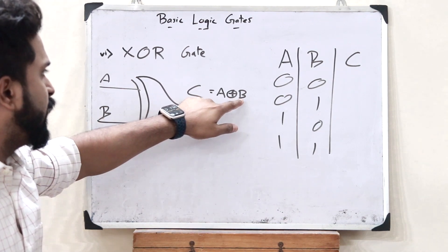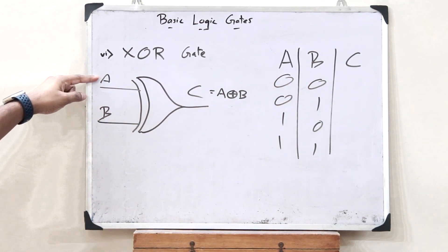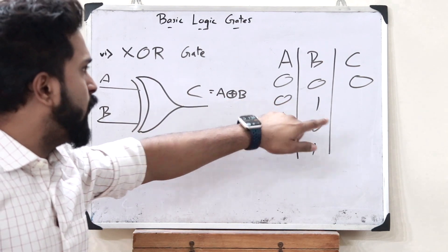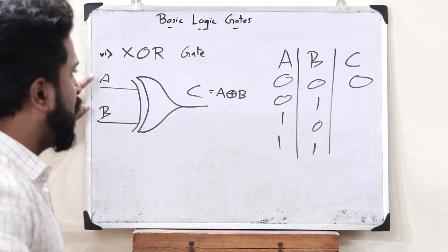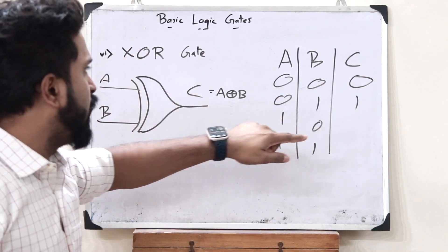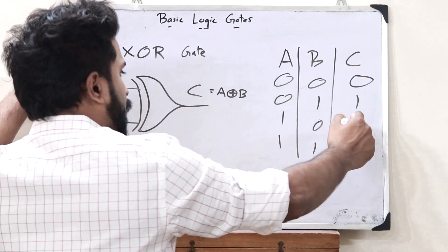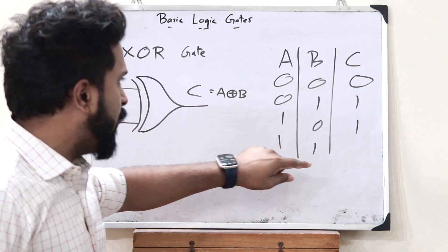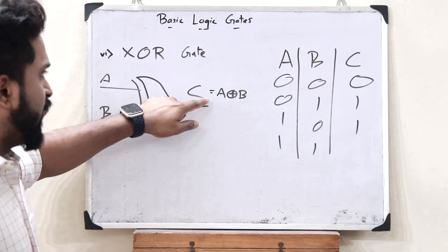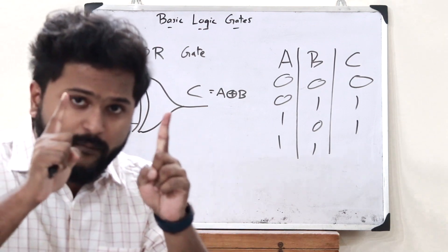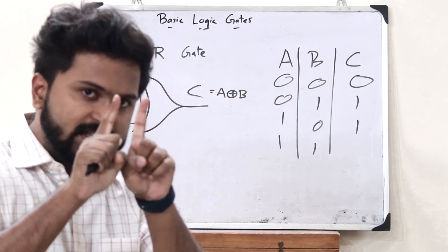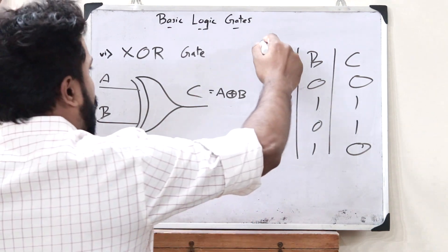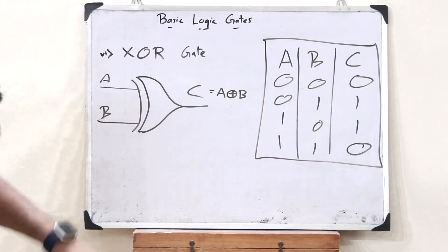When both inputs are 0: 0 exclusive OR 0 is equal to 0. When the inputs are 0 and 1: 0 exclusive OR 1 is 1. When the inputs are 1 and 0: 1 exclusive OR 0 is 1. Now for the important part — when both inputs are 1: 1 exclusive OR 1 gives 0. When two 1s are taken as exclusive OR with each other, it becomes 0. This is the function of exclusive OR — the basic truth table of an exclusive OR logic gate.